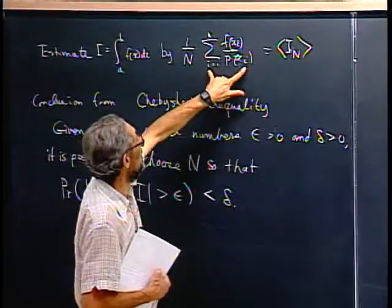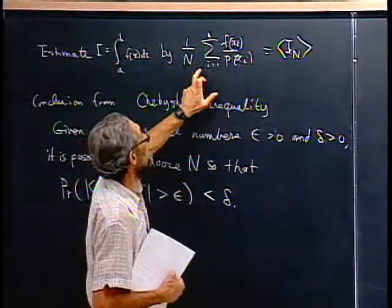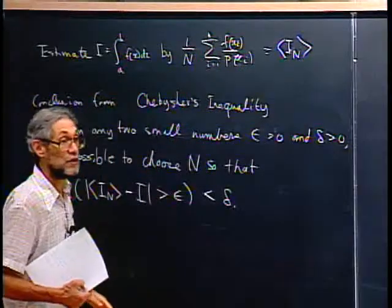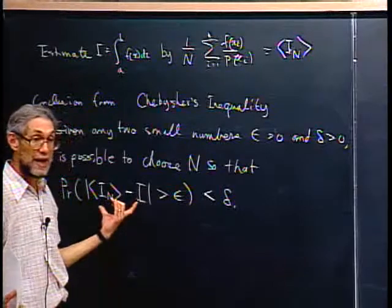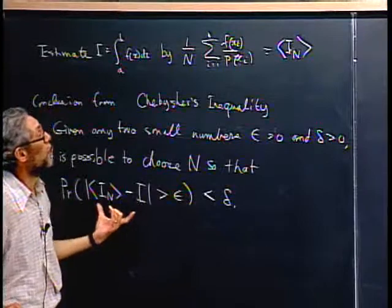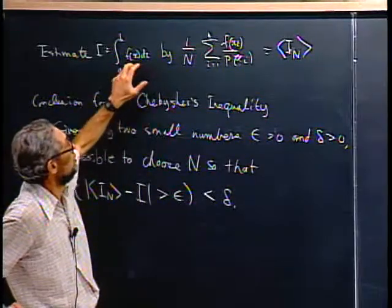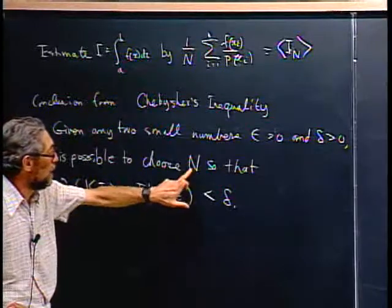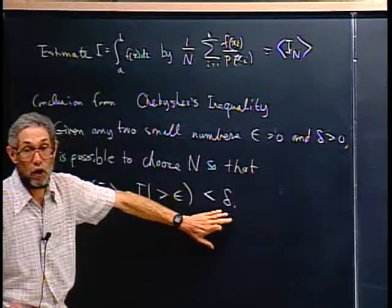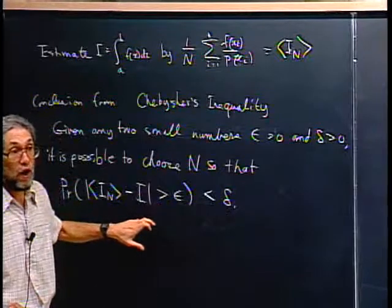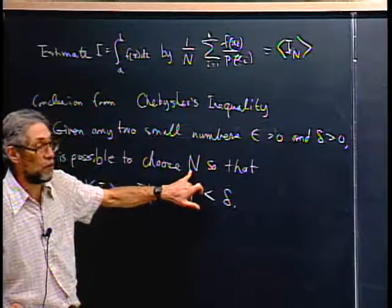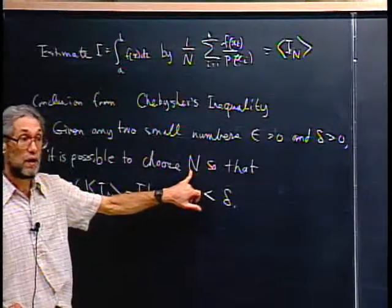We estimate the integral by taking n samples and averaging the value of f(xi) over p(xi) — that's the estimate I(n). What you can get out of Chebyshev's inequality is: suppose you know how close you want to get. You can't guarantee you'll always be that close because random samples can always produce a fluke. But based on the variance of f(x)/p(x), you can choose n large enough so that the probability of error exceeding your specified bound is arbitrarily small. The formula for n will use the variance — obviously if the variance is large, you need a larger n.